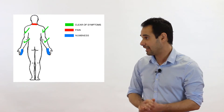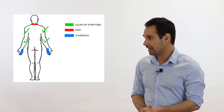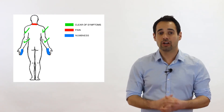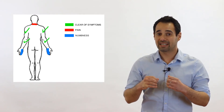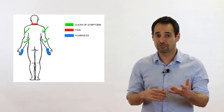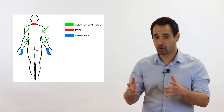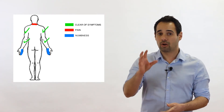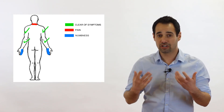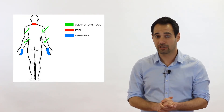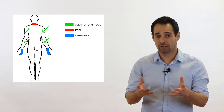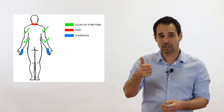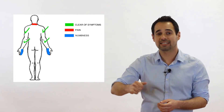Our third patient has neck pain without shoulder or elbow pain, but they do have numbness in both hands. For joints above and below, there are no major joints above, but the thoracic spine and shoulder need clearing with range of movement testing with overpressure. For the neuro component, numbness triggers an assessment of the closest spinal structure — the cervical spine — plus an upper limb neurological examination including dermatomal testing, myotomal testing, upper limb tension tests, and reflex tests of the upper limb.